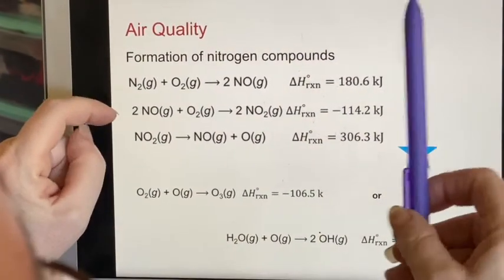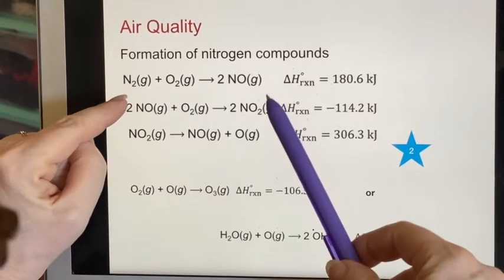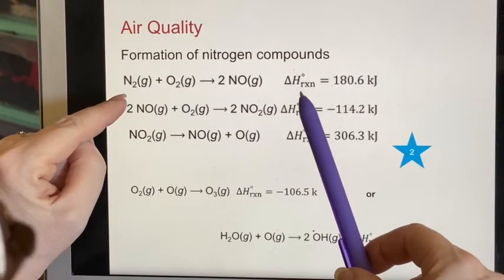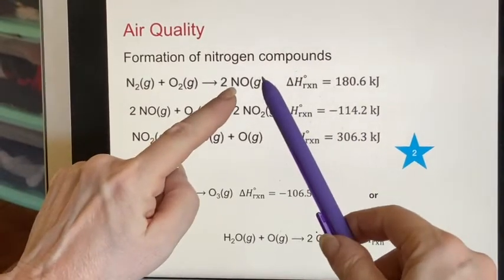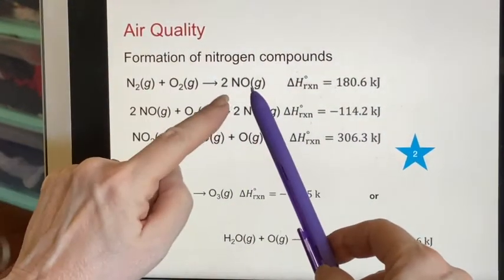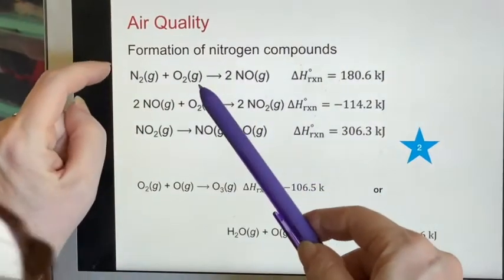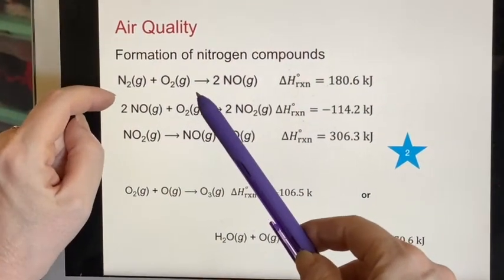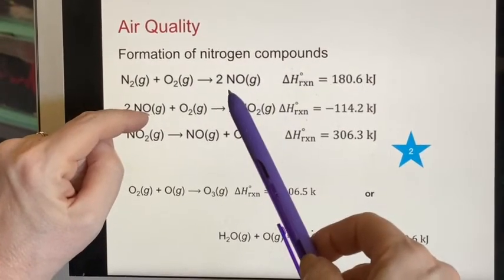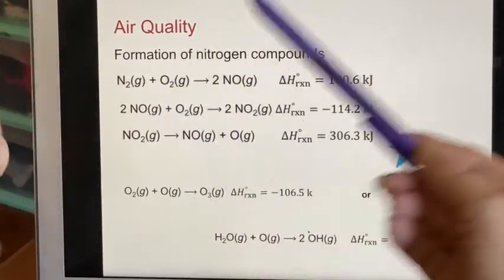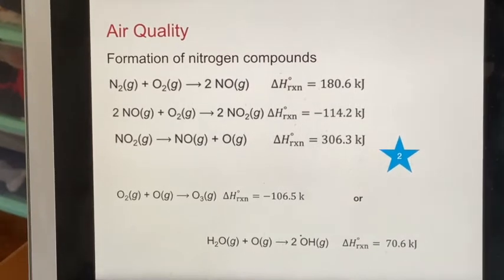Let's look at this for a moment and think about it. This delta H is a positive number. That means this has more energy than that did. That means it can only happen if energy has been put into it. Well, that's comforting because otherwise the whole atmosphere would be nitrogen monoxide instead of the nitrogen and oxygen that we're used to seeing in the atmosphere.